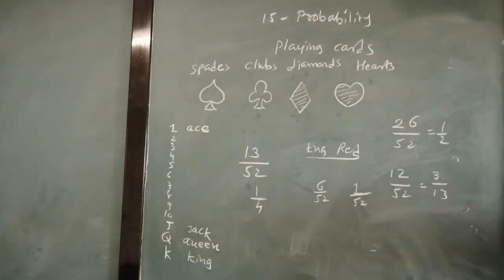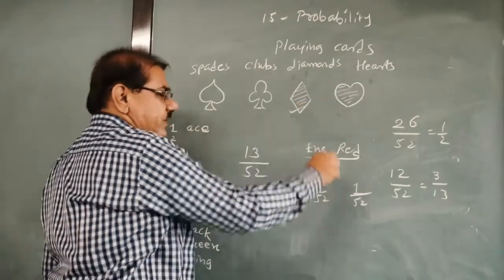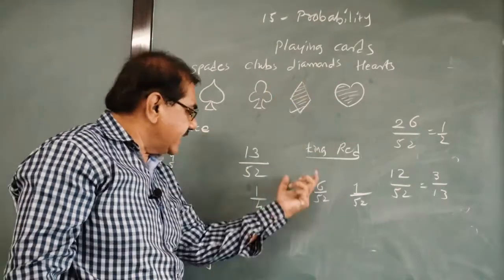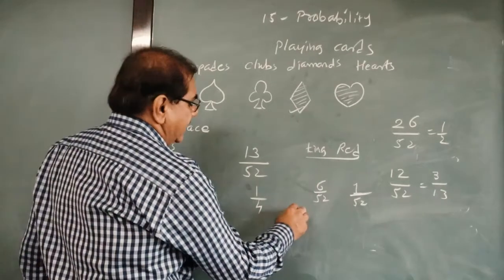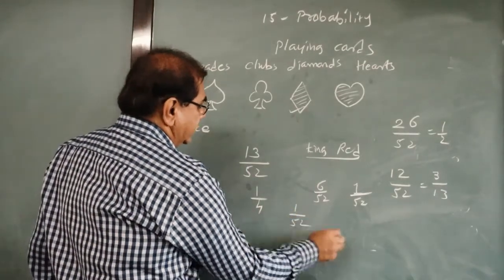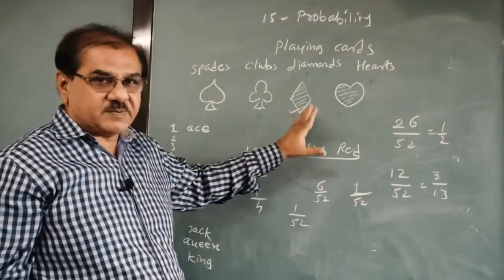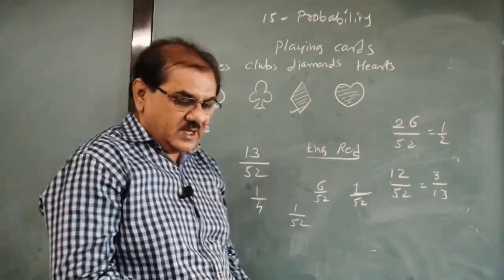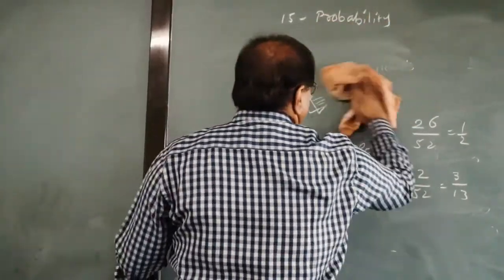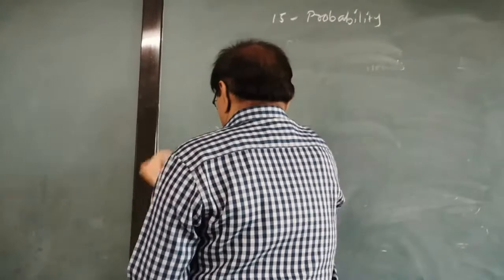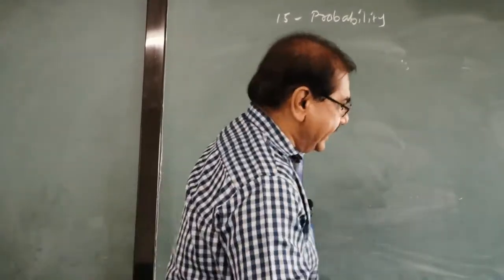One more, the queen of diamond. Diamond means these only. In diamond category, how many queens are there? Only one. So it is again 1 upon 52. So this is how if you know these colors properly, then you can find out the probability. Please remember the shape and the colors of these four traits.